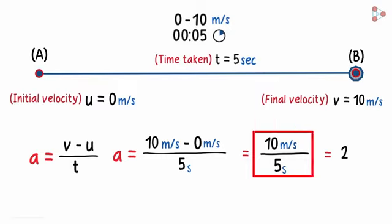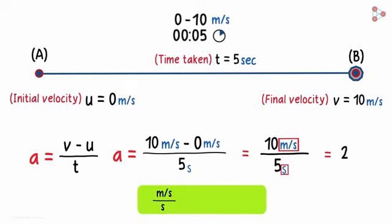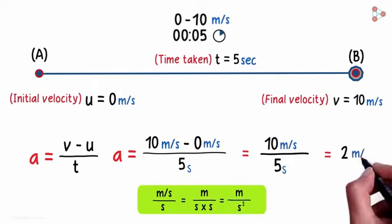We should get a hint by looking at this. The units of acceleration will be meters per second per second, because it's the change in velocity over the time taken. As this is meters per second, we can carry this second to the denominator and what we will get is meters per second squared.